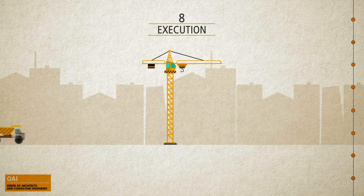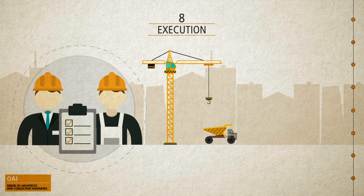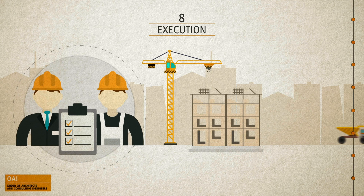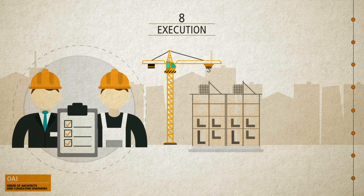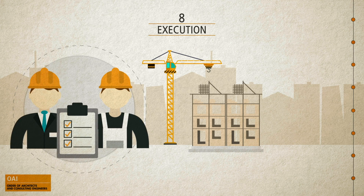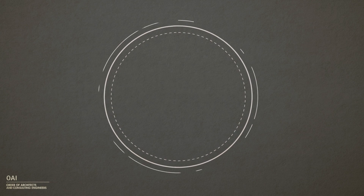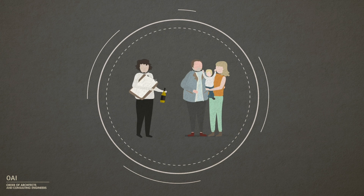The execution of the works follows a clear chronology. The architect controls the site during the course of the work, resolves any problems, and may require the repair of badly executed work.